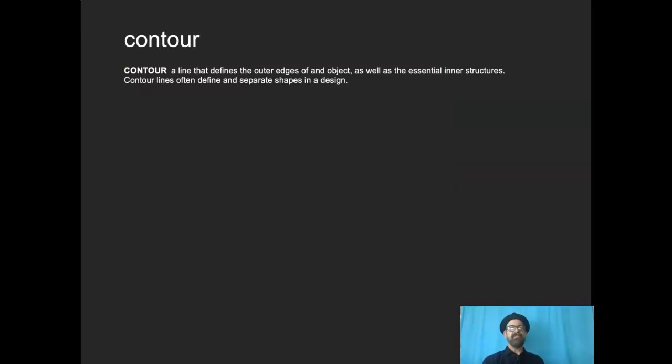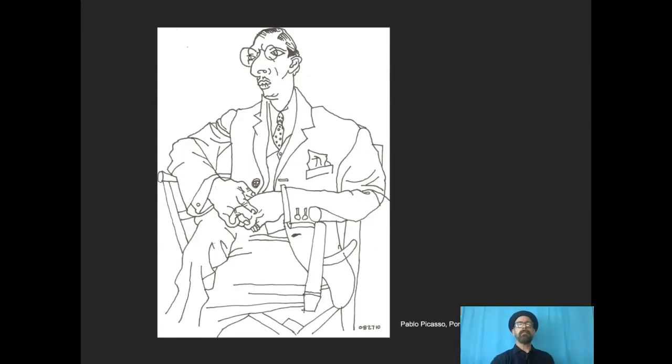Contour. This is kind of very rudimentary. It's how we learn to draw is drawing contours. The contour is a line that defines the outer edges of an object, as well as certain central inner structures. Contour lines often define and separate shapes within a design. The way we differentiate is the edges of those shapes and contour lines define those edges.